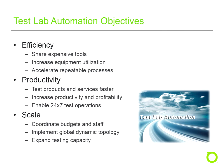Additionally, by automating repeated processes, you can not only save time but also reduce the potential for error. Testing products and services faster by enabling true 24 by 7 lab operations will improve overall lab productivity, reducing time to market and allowing the product or service to contribute to the bottom line more quickly. Finally, automation allows test labs to scale more effectively by coordinating budgets and staff for targeted, measurable improvements, greatly expanding testing capacity and reducing downtime.